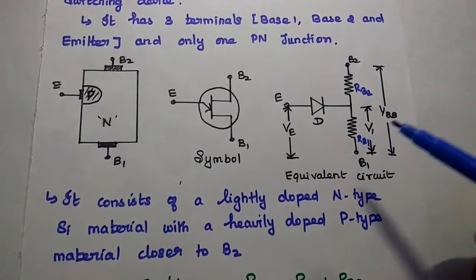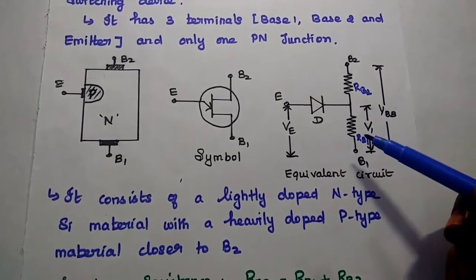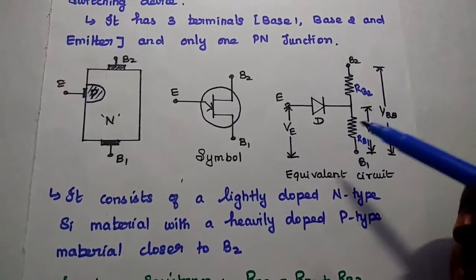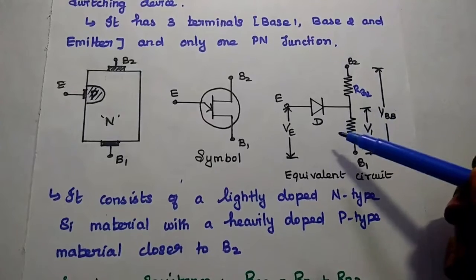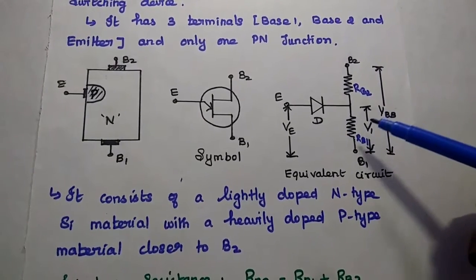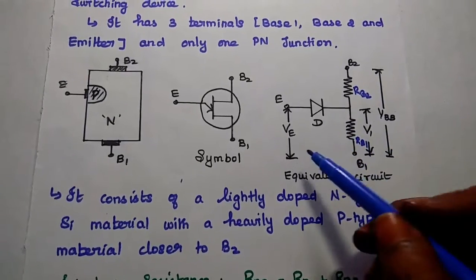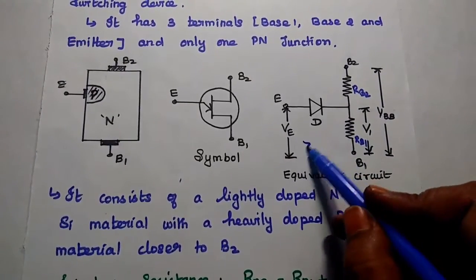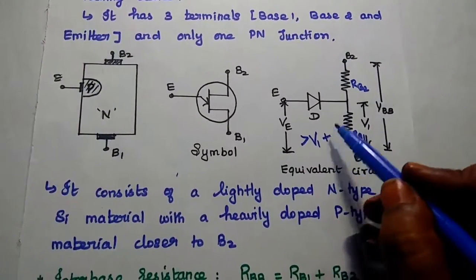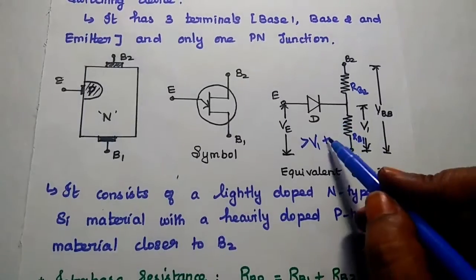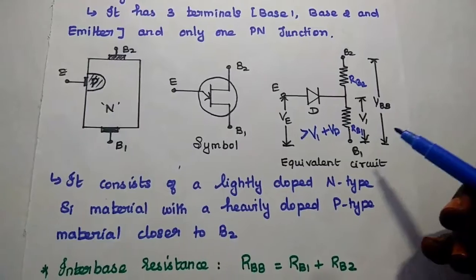Here we have to consider three important parameters to analyze the operation of UJT. Whenever the emitter voltage is greater than V1 — V1 is the voltage across RB1 — and also the cut-in voltage of the diode, then only the UJT can start conducting current flow.